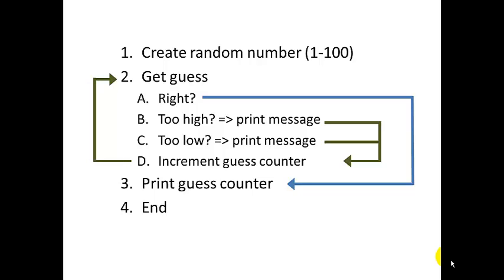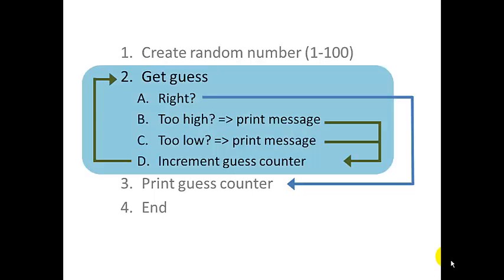Now step two looks an awful lot like a loop, right? What kind of loop? Well a for loop is only useful when you know exactly how many iterations you want to repeat. But in this case we don't know. We don't know how many guesses the user is going to take to get the right answer.